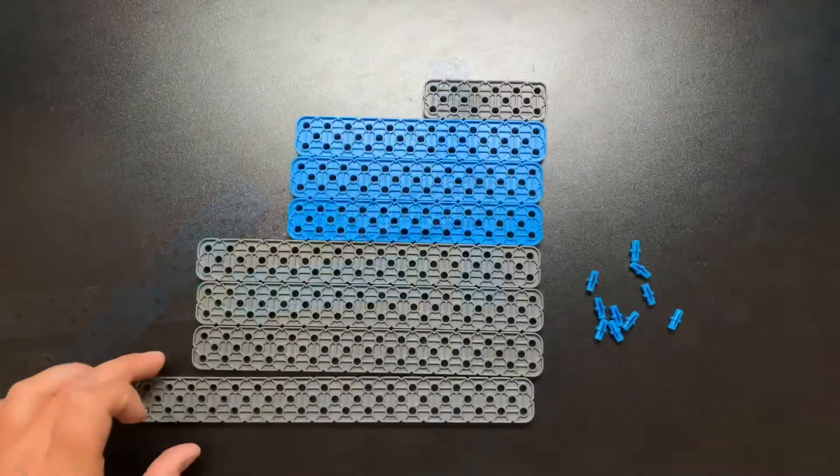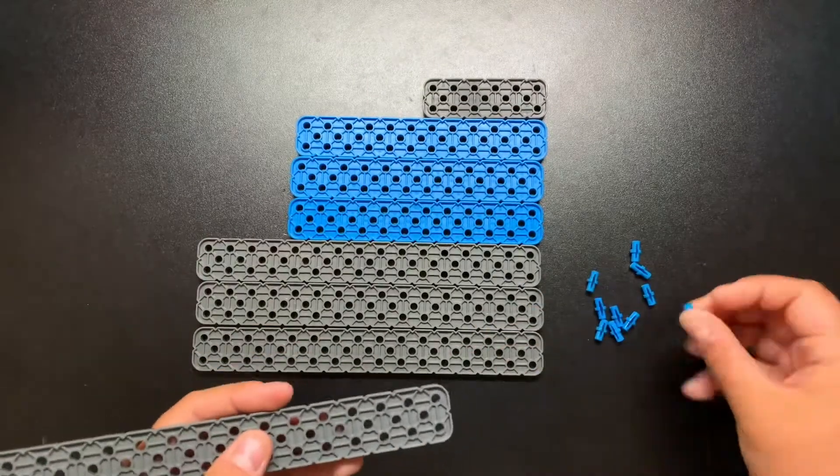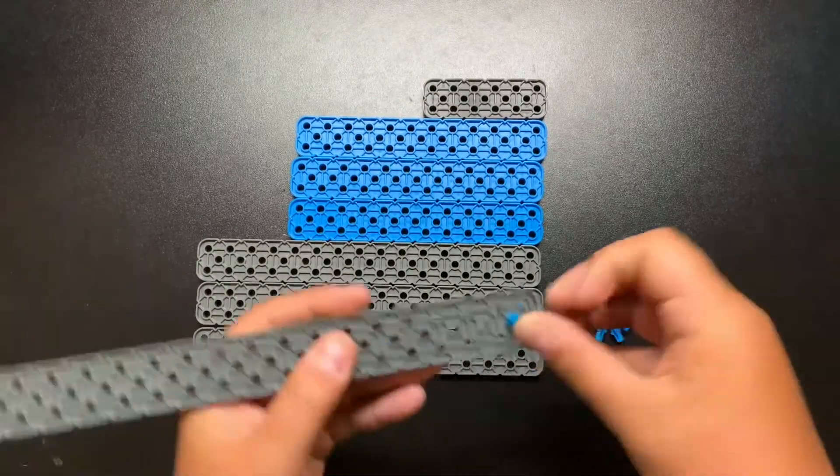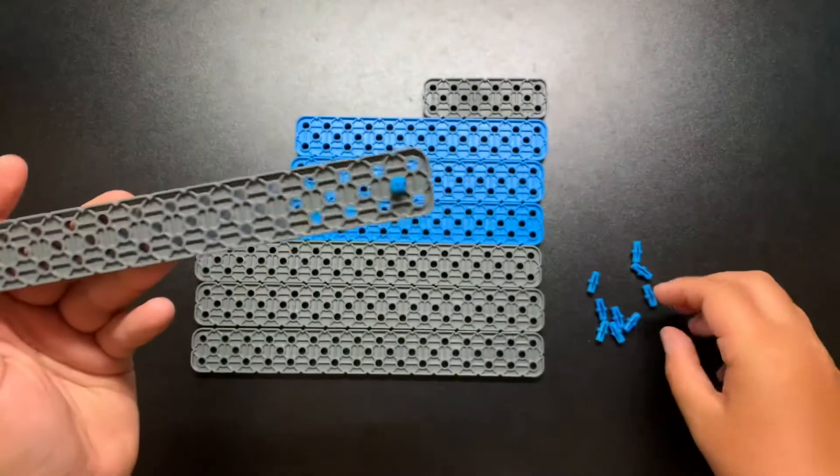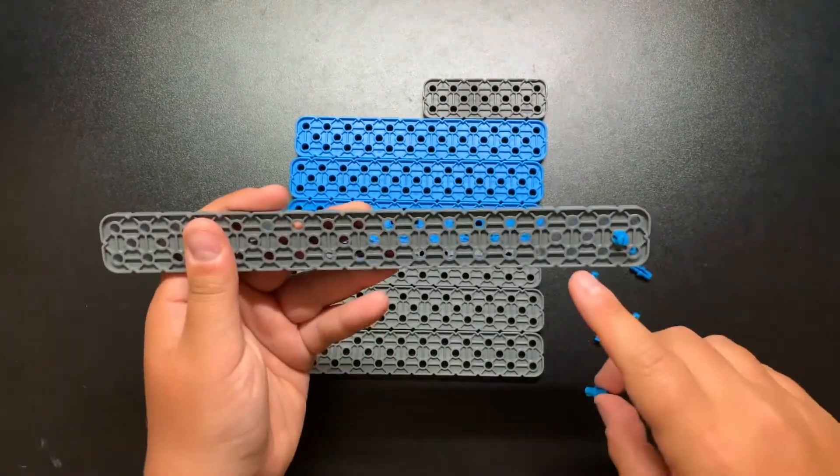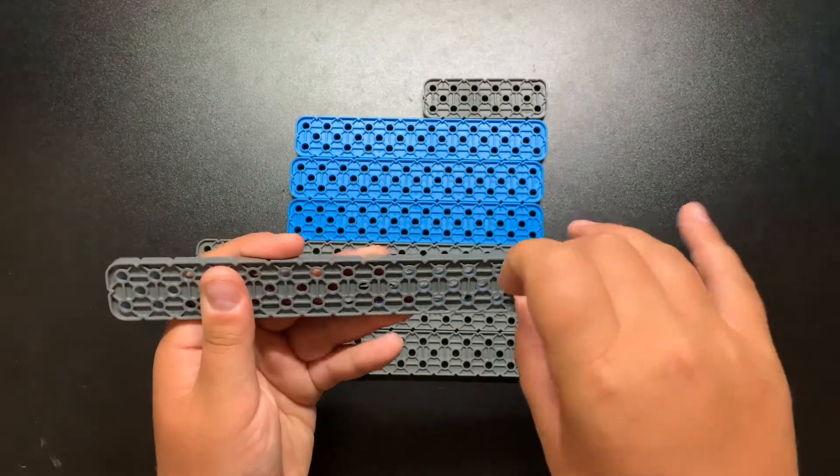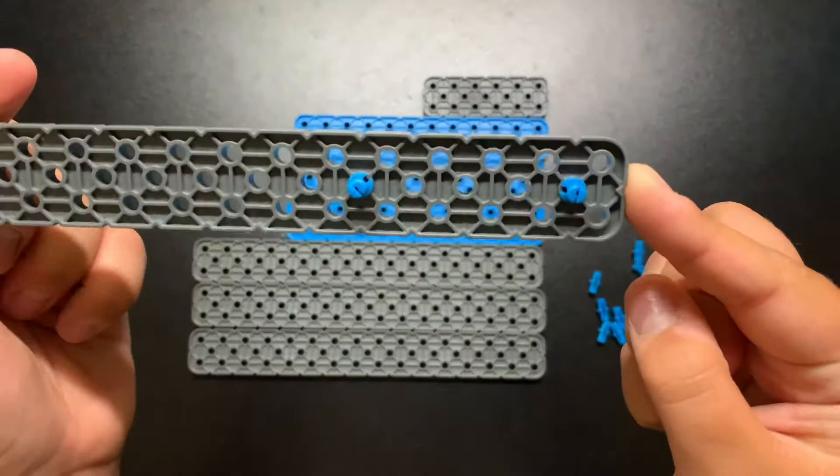Now let's get building. First you will need your 2 by 20 beam. Get one connector pin and pop it in the hole right there. Get another connector pin and count three holes from the middle down. So there should be three holes in the middle.